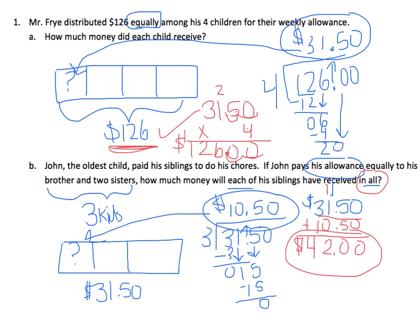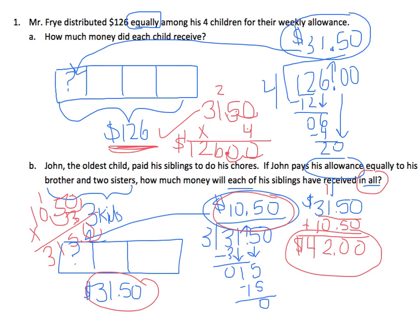The same check applies to John's amount. I figured out that each of the three siblings gets $10.50, so three times $10.50 should equal $31.50. Three times zero is zero, three times five is 15, three times zero is zero plus one is one, three times three is three. Place the decimal two spots — $31.50. It checks out.